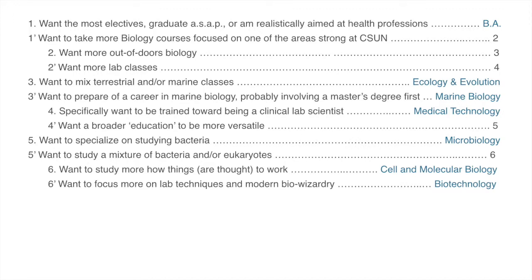The second couplet in the key asks whether you're more of an outdoors person who wants field classes, or more of an indoors person who wants lab classes. If you're an outdoors type, the next question is whether you want a mixture of terrestrial and marine classes, or want to focus specifically on marine classes — which likely means you're aiming at graduate school in marine biology. For those more interested in lab classes, ask yourself whether you specifically want to be trained as a clinical lab scientist — one of those people who takes blood at the doctor's office and runs tests on it.